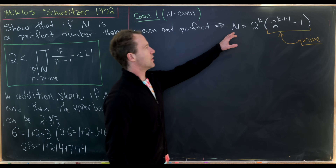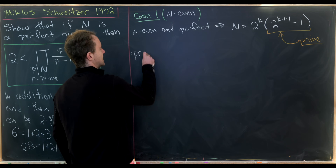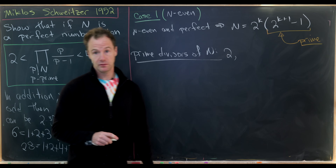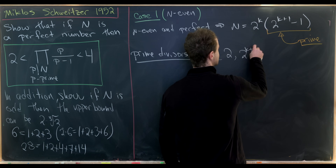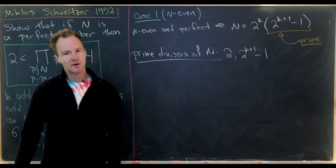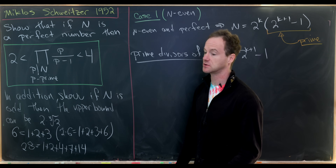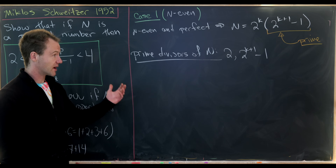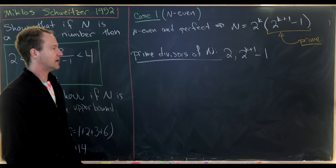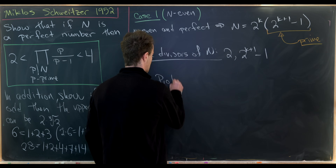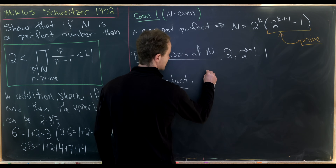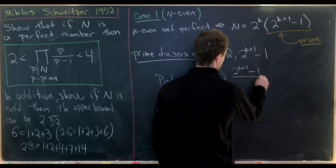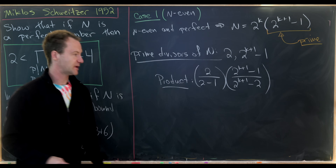So we know exactly the prime divisors of N: only the number 2 (because it's even) and this Mersenne prime 2 to the k+1 minus 1. There are only two prime divisors, consistent with our examples — the only prime divisors of 6 are 2 and 3, and of 28 are 2 and 7. So let's calculate the product and show it's bounded between 2 and 4. The product equals 2 over (2 minus 1) times (2 to the k+1 minus 1) over (2 to the k+1 minus 2). Note that 2 minus 1 is just 1, and this second term has 2 to the k+1 written as 2 times 2 to the k minus 1.